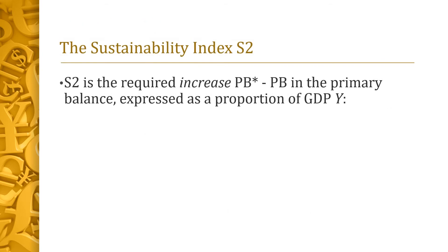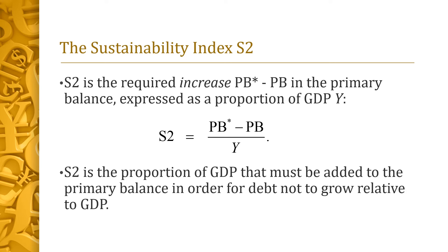We can now define the sustainability index S2. It is simply the increase in the primary balance that would be needed for debt to become just barely sustainable, expressed as a proportion of GDP Y. That is, S2 equals PB* minus PB, all divided by GDP Y. Put another way, S2 is the proportion of GDP that a country must add to its primary balance in order for the country's debt not to grow more quickly than its GDP.